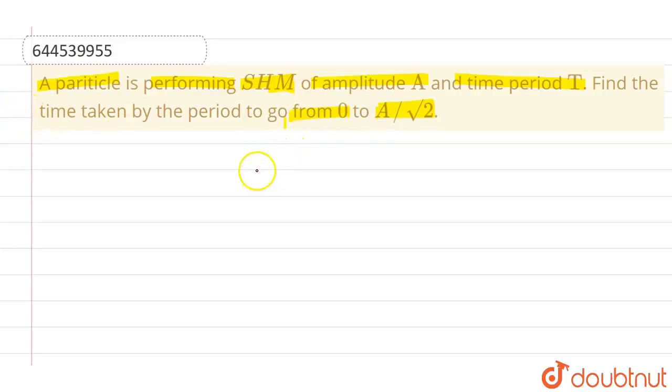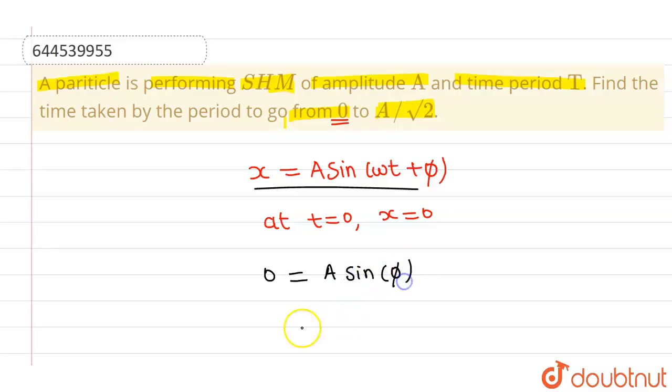Let me assume that the equation of simple harmonic motion is given by x equals A sin omega t plus phi. Now, since the particle is starting from x equals 0, so at t equals 0, particle is at x equals 0. If I put this particular condition in this equation, I will be getting 0 equals A sin phi.